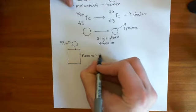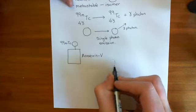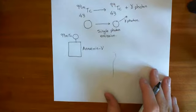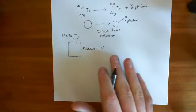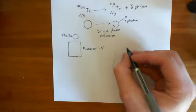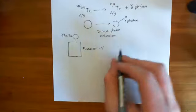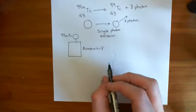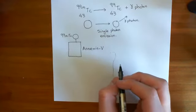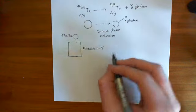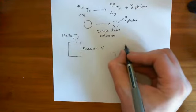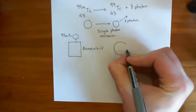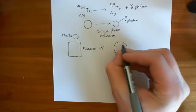What we do is we put this Annexin-5 into our patients — we put it into the blood. Why is this important? Well, to understand why we're doing this, we need to have a bit of knowledge of apoptosis and what happens to cells when they undergo apoptosis. So let's say this is a cell here and it's undergoing apoptosis.